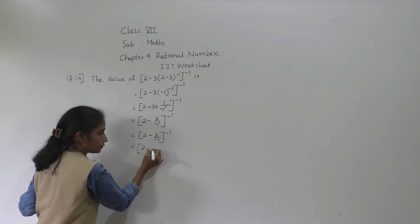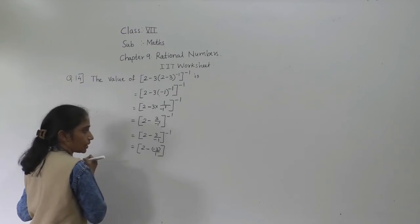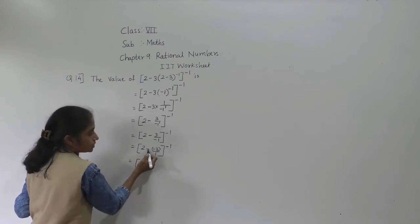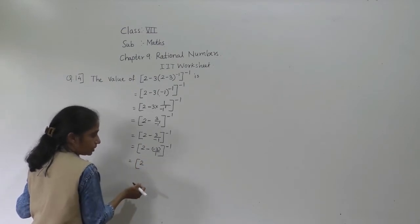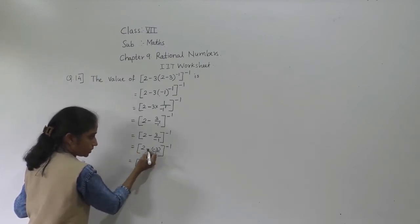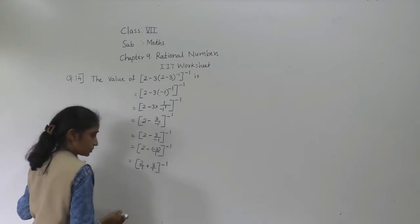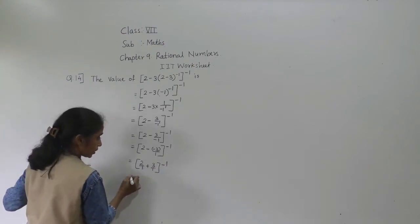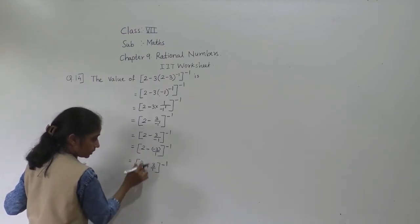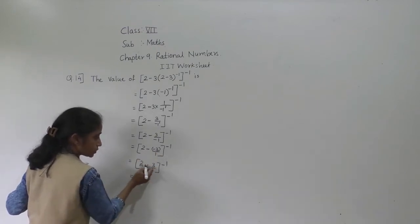Now we have 2 minus 3 upon minus 1, and this bracket is raised to minus 1. We can shift the denominator to become minus 3 upon 1, raised to minus 1. Then: minus minus gives plus, so it becomes 2 plus 3 upon 1, raised to minus 1. Denominators are the same, so 3 plus 2 equals 5. We get 5 upon 1, which is 5, raised to minus 1.